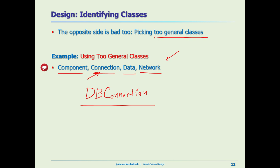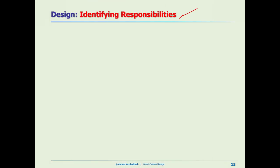We're done with identifying the classes. Now let's turn to identifying responsibilities. How can we identify responsibilities? Responsibilities are almost equivalent to API or interface, but we might look at them from a higher level — higher-level concepts — more than just the specific method names that API implies.